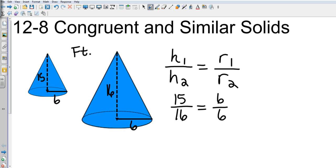Now we could cross multiply this section, but obviously 6 over 6 equals 1, and 15 over 16 is not going to equal 1, so these would not be similar. And obviously, if they're not similar, they're also not going to be congruent.